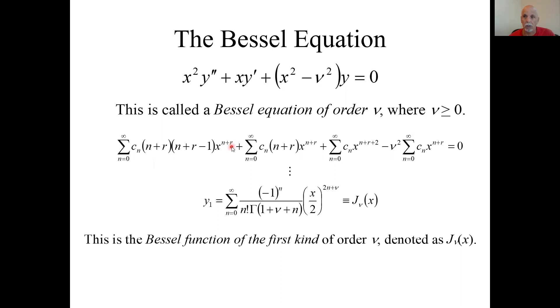So this r here is going to be nu for the larger indicial root. But if we use our normal way we've been solving series solutions for Frobenius series, we substitute in the Frobenius series for y up here. So with those substitutions, we get this.